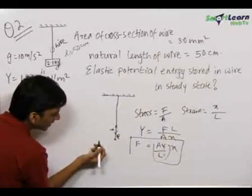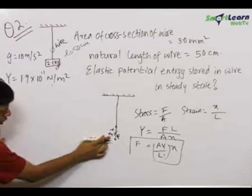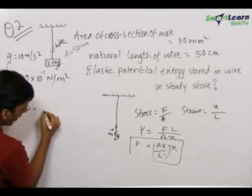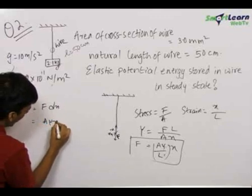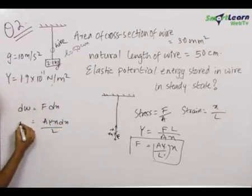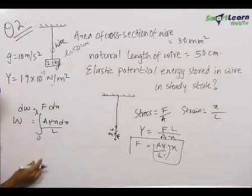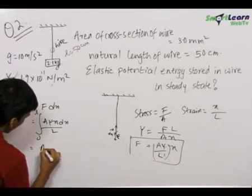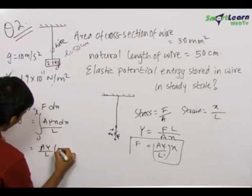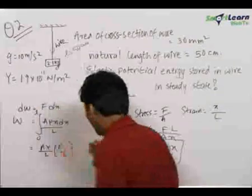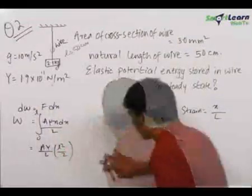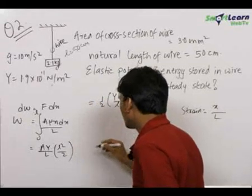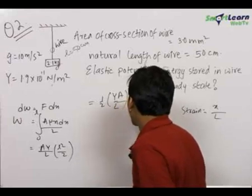At extension x, let there be a further dx extension in the wire. The work done by the external force F comes out to be F·dx, which equals (AY·x·dx)/L. To find the total work done as x goes from 0 to the total extension L, this comes out to be (AY/L) · (L²/2). Rearranging, this equals ½ · (YA/L) · L².